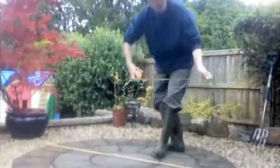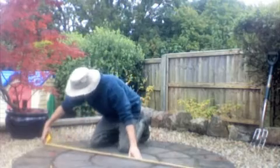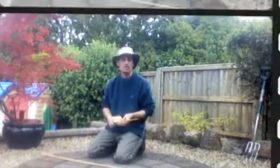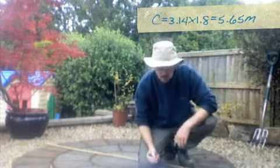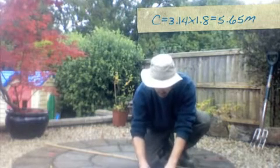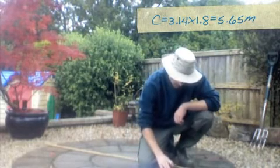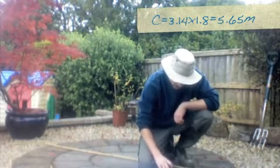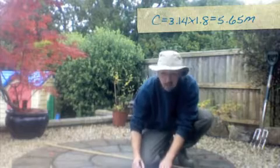Let me grab my tape measure. Looking very carefully, it is exactly a diameter of 180 centimetres, or 1.8 metres. Now to find the circumference — the perimeter, the distance around the outside — I need to times the diameter, which is 1.8 metres, by pi. I use pi rounded to two decimal places: 3.14. So 1.8 times 3.14 gives us a circumference of 5.65 metres.